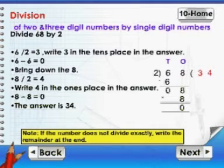6 by 2 is equal to 3. Write 3 in the tens place in the answer. 6 minus 6 is equal to 0. Bring down the 8. 8 by 2 is equal to 4. Write 4 in the ones place in the answer. 8 minus 8 is equal to 0. The answer is 34.